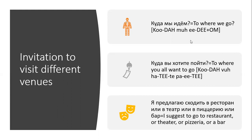Or you could suggest specific places like я предлагаю сходить в ресторан или в театр, или в пиццерию, или в бар. I suggest to go to a restaurant, or theater, or pizzeria, or bar.